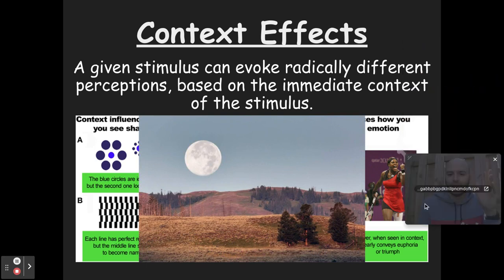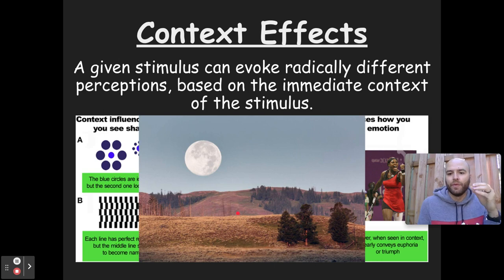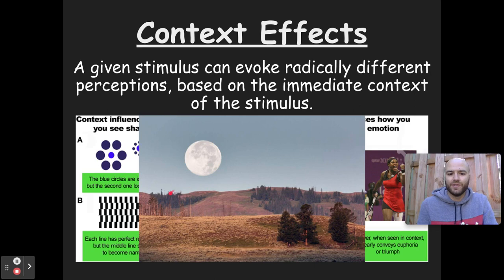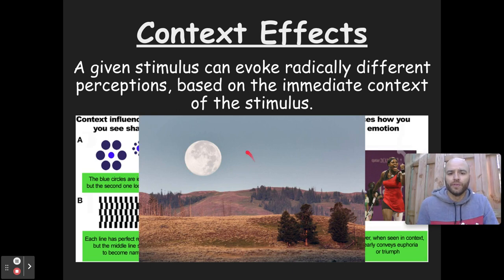Here's another example — the moon illusion. When you see the moon close to the horizon, it looks huge. When it's up in the sky, it looks smaller. In reality, both moons are the same size. The difference is that near the horizon, you have context — buildings, trees, land — to compare it to, making you realize how big the moon is. When it's high in the sky, there's nothing to compare it to. That's the moon illusion, which is another context effect.